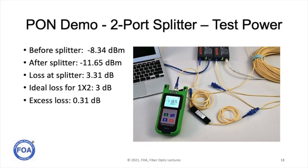Now let's test our link. We'll take our fiber optic power meter and measure the output of the two-port splitter. Before the splitter we measured minus 8.34 dBm; after the splitter we're measuring minus 11.65 dBm, so across the splitter we have a loss of 3.31 dB. An ideal 1x2 splitter would have a loss of 3 dB, so in this case we have an excess loss of 0.31 dB.